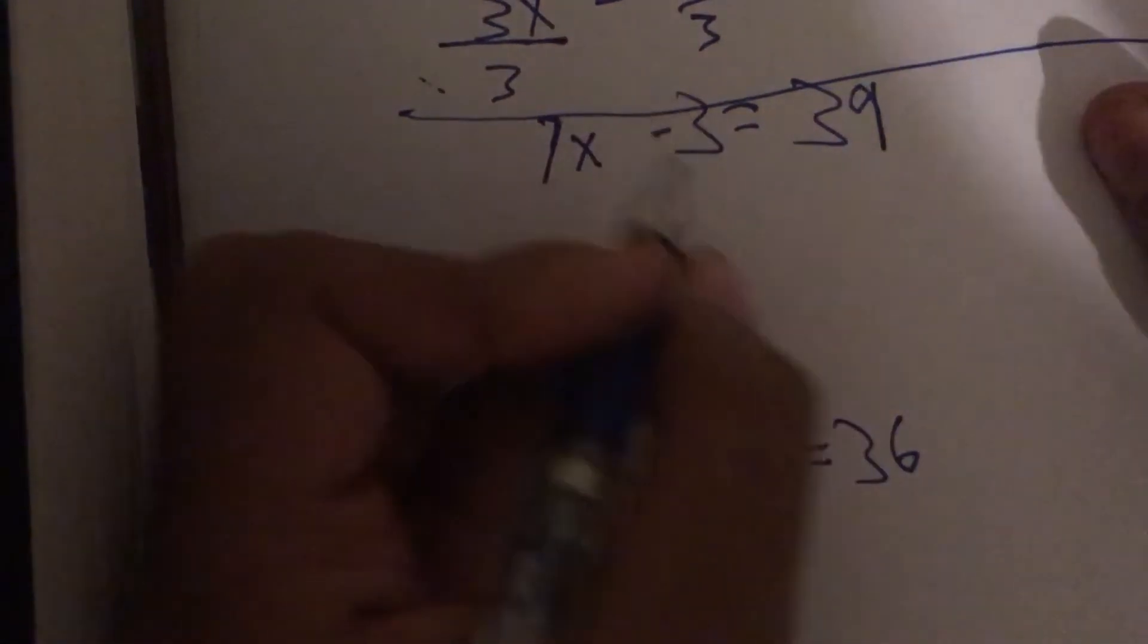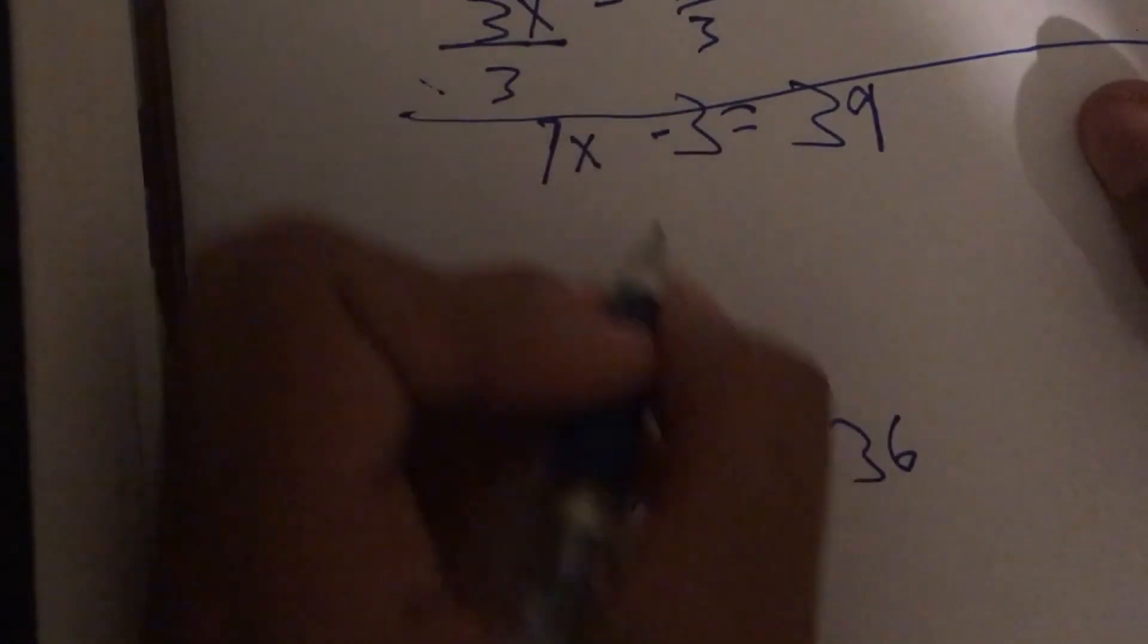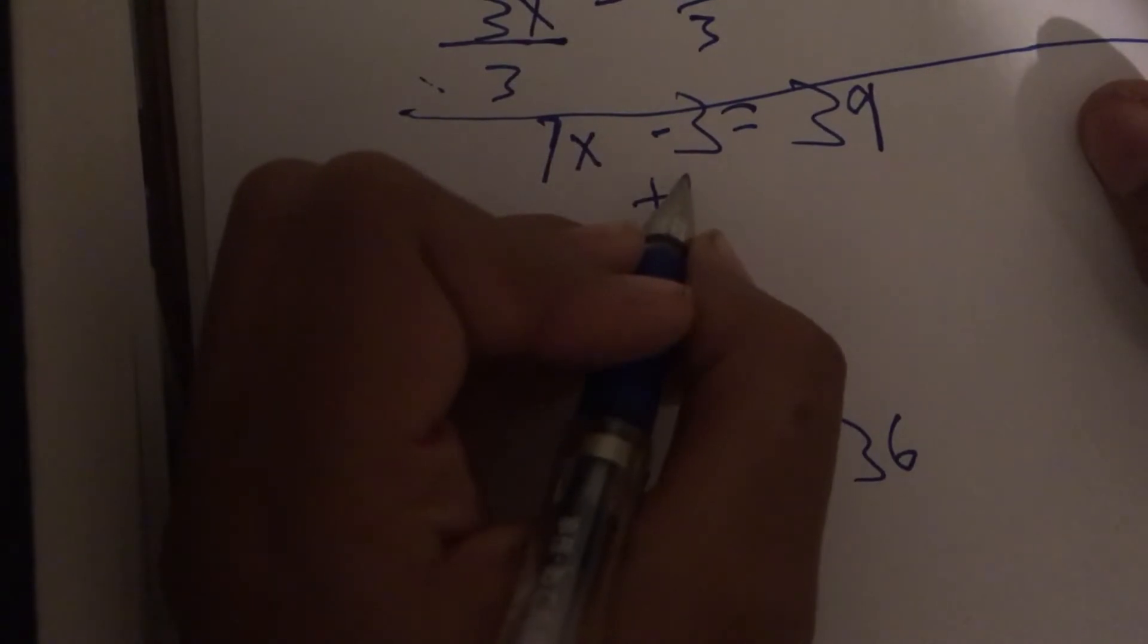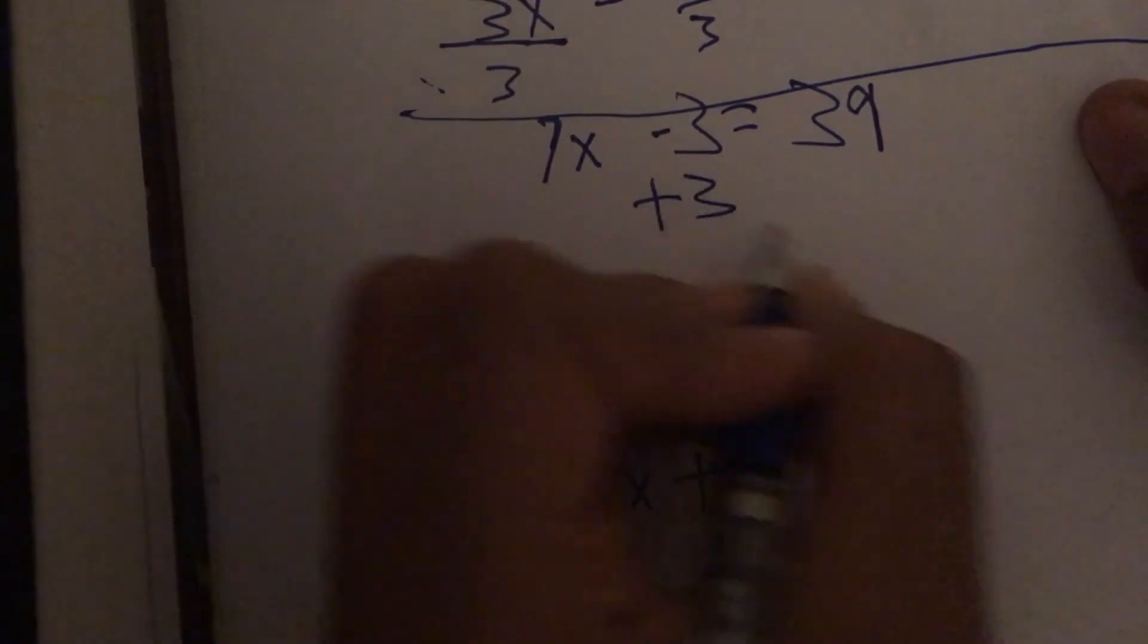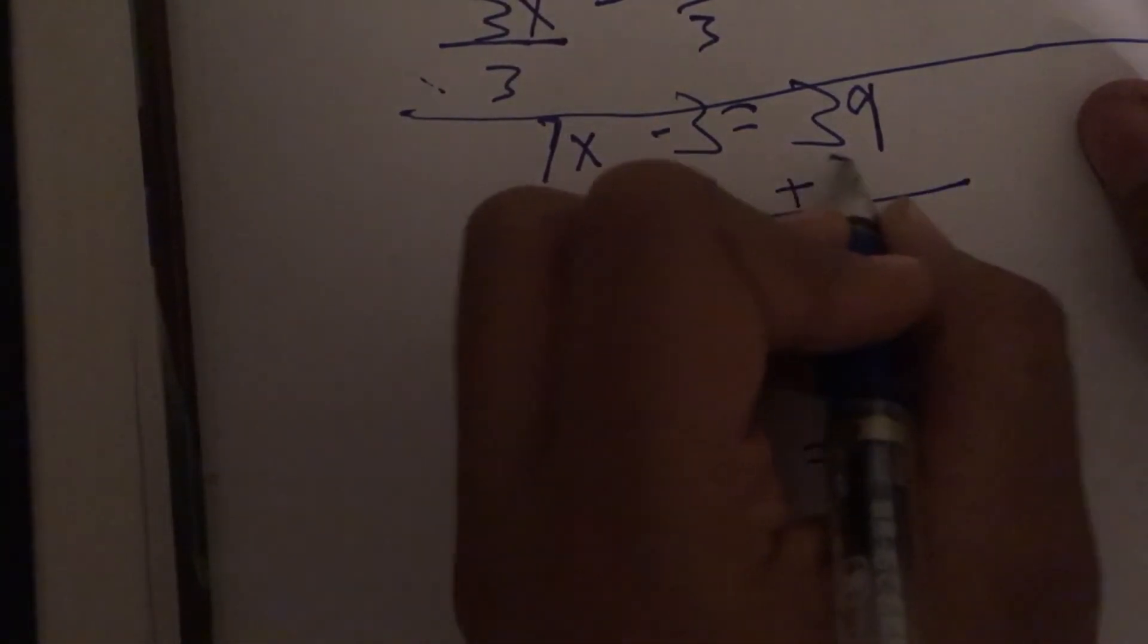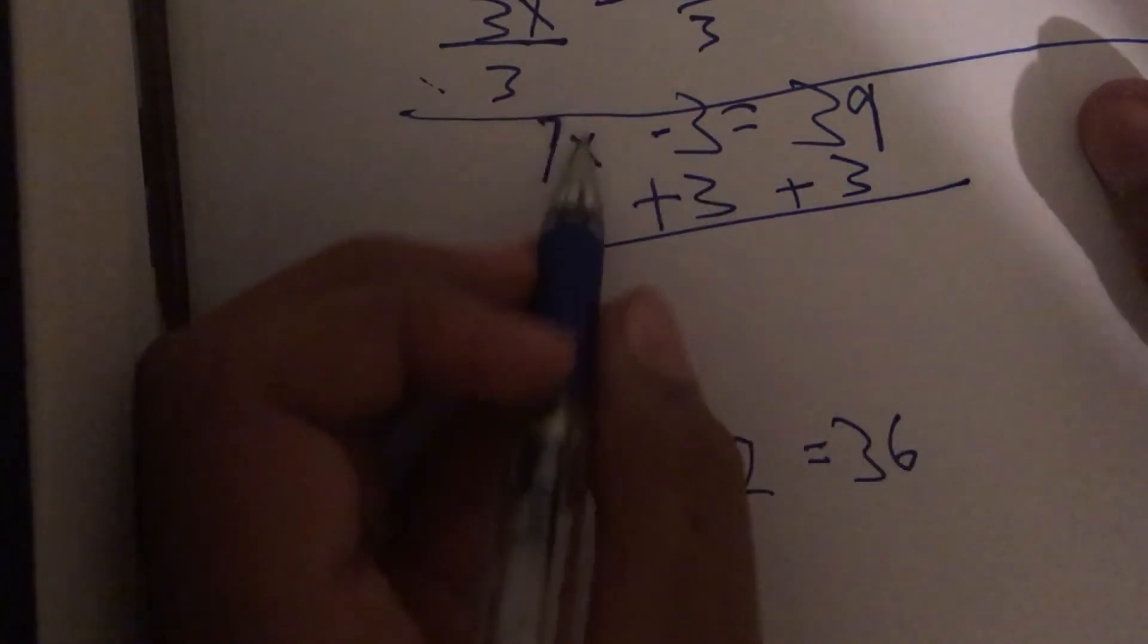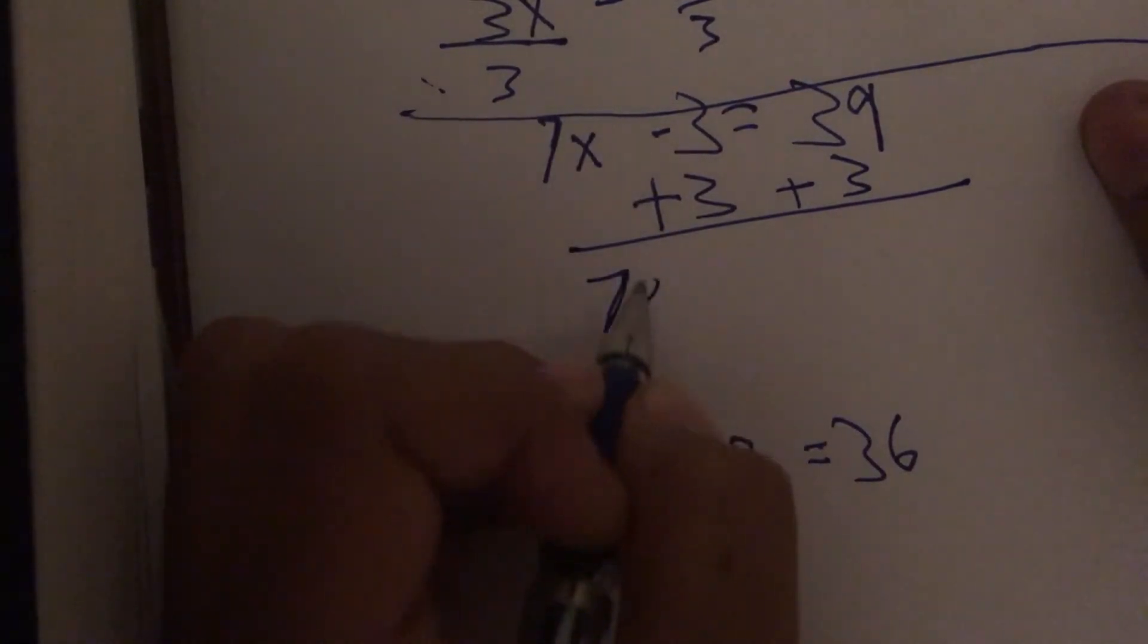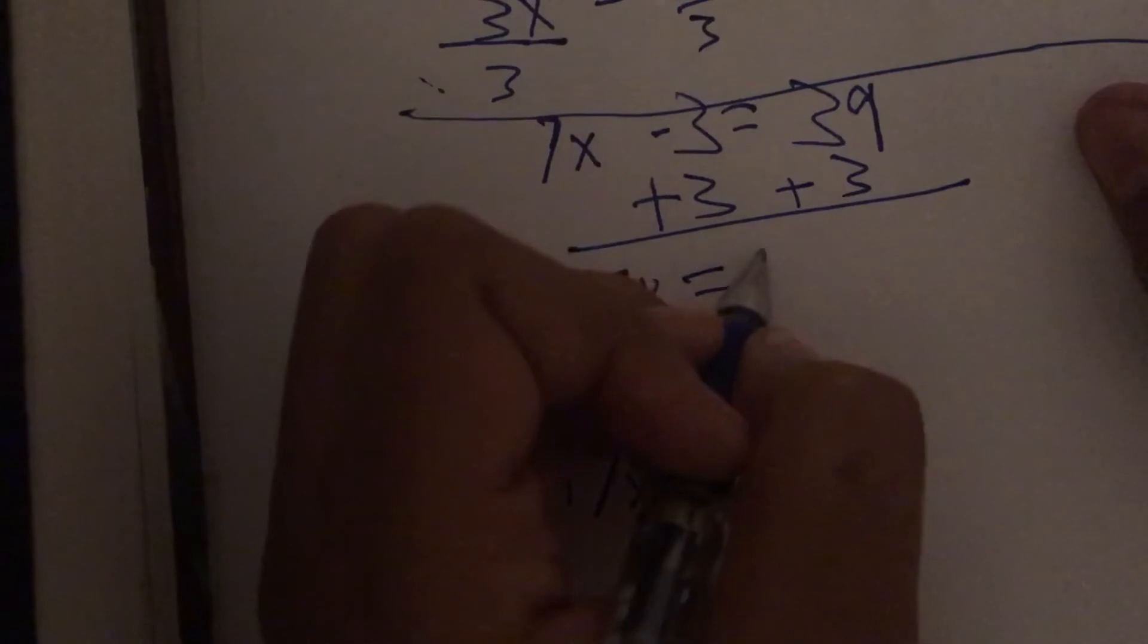All we have to do, instead of subtracting, is going to be adding, since it's a negative number. So, we're going to add 3 to both sides, and we're going to get 7x equals 42.